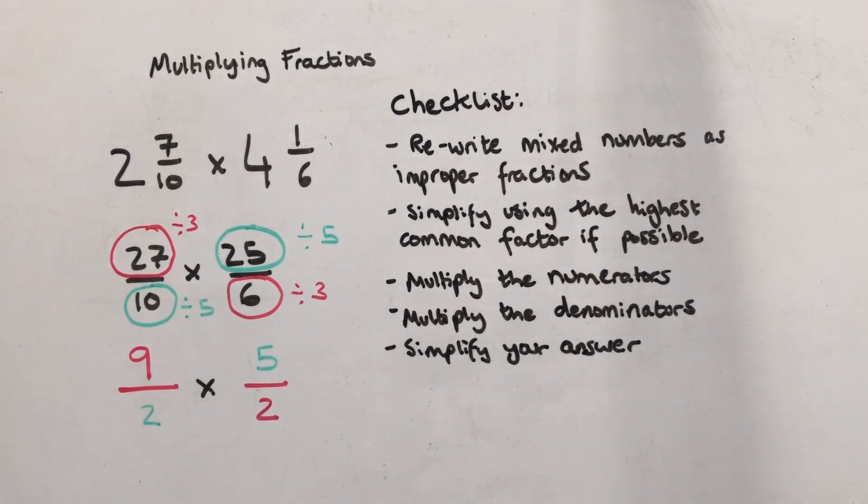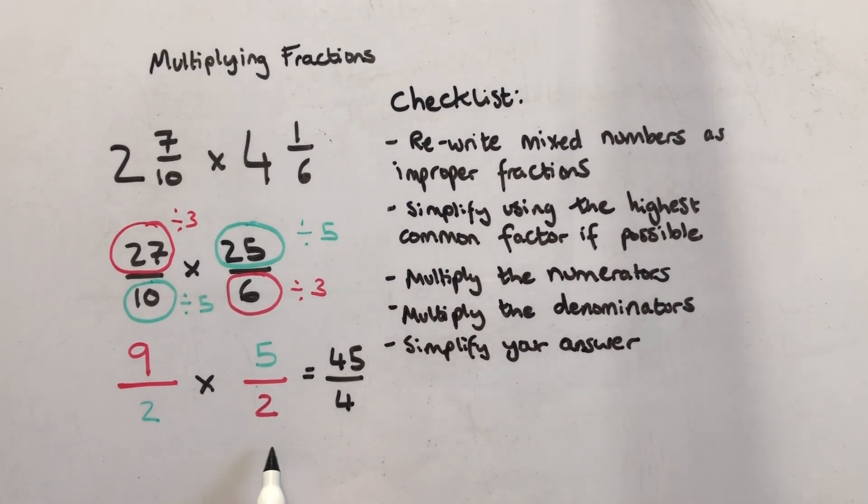Now I've simplified my fraction. I can carry on and multiply the numerators, multiply the denominators and simplify my answer. So nine times five equals forty five. Two times two equals four, which is actually an improper fraction. So I can change it to a mixed number, eleven and a quarter.